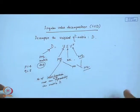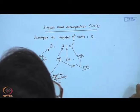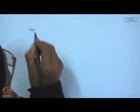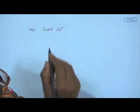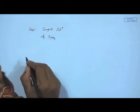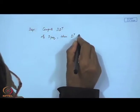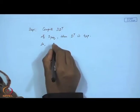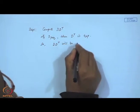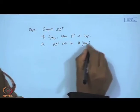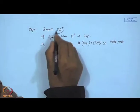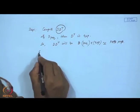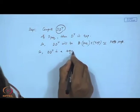Step one is to compute D D transpose. If D is P cross Q, then D transpose is Q cross P. So D D transpose will be P cross Q times Q cross P, which is P cross P — a square matrix. D D transpose is a square matrix.